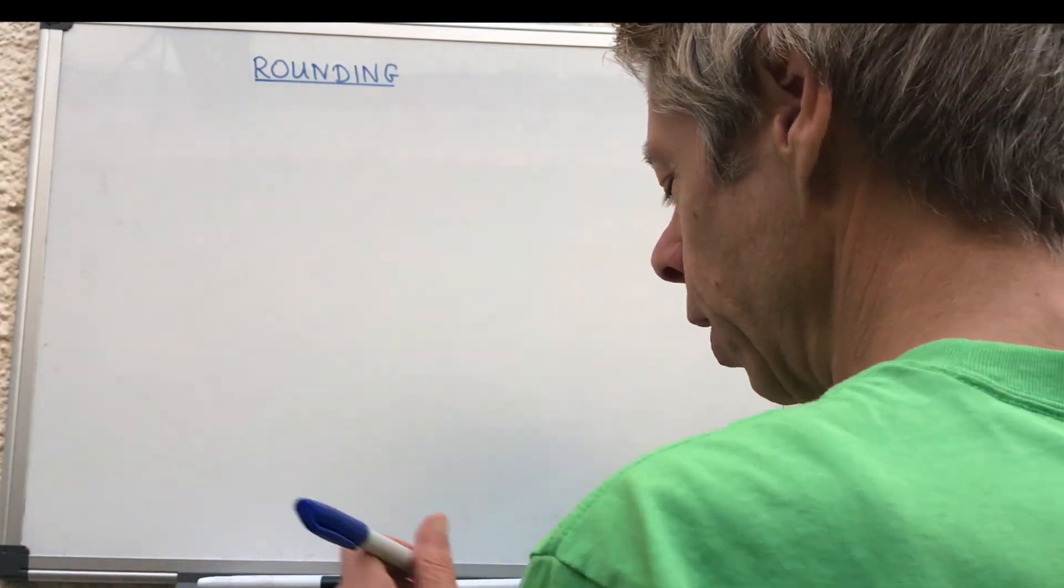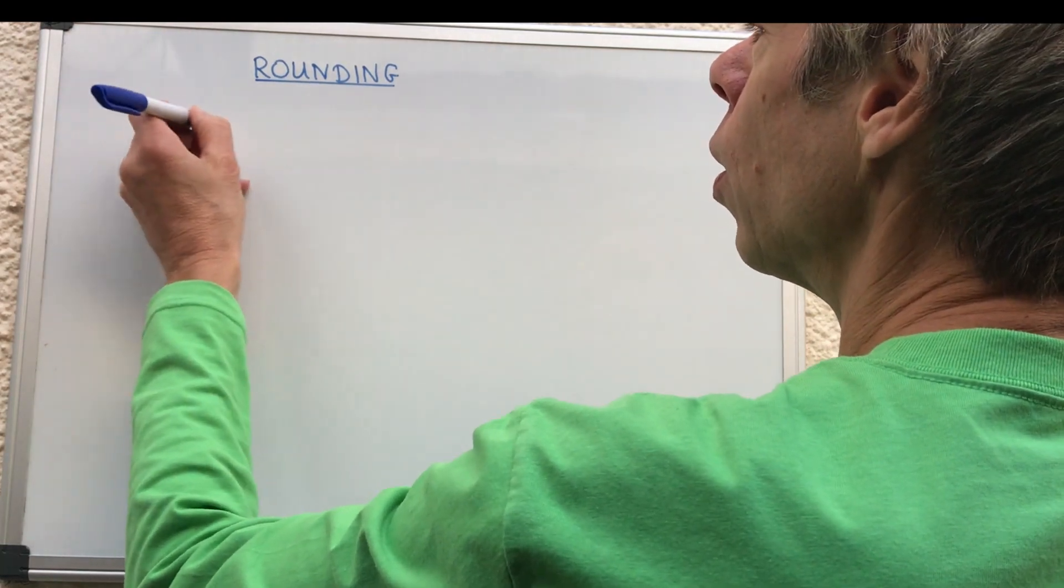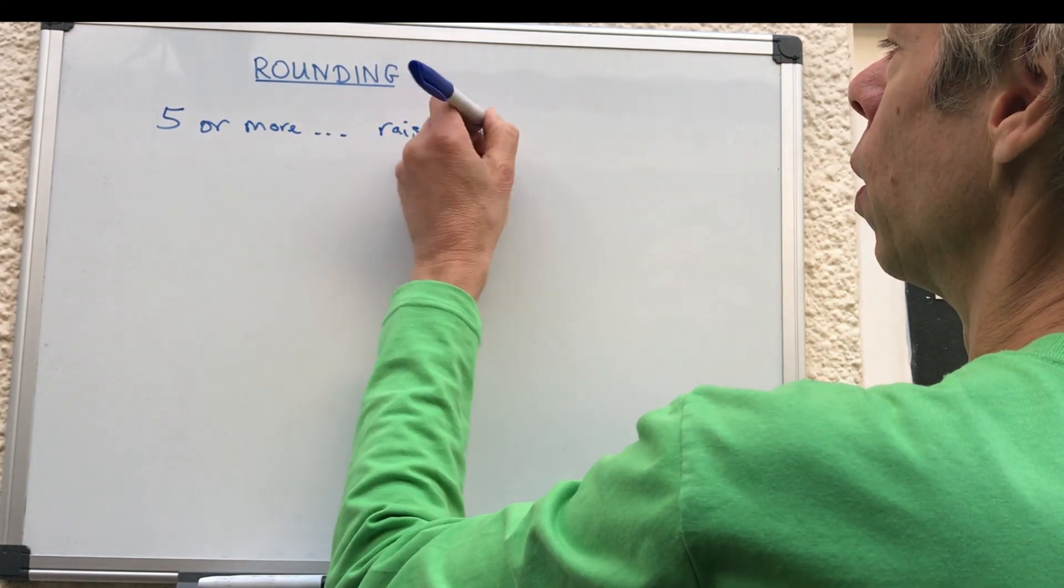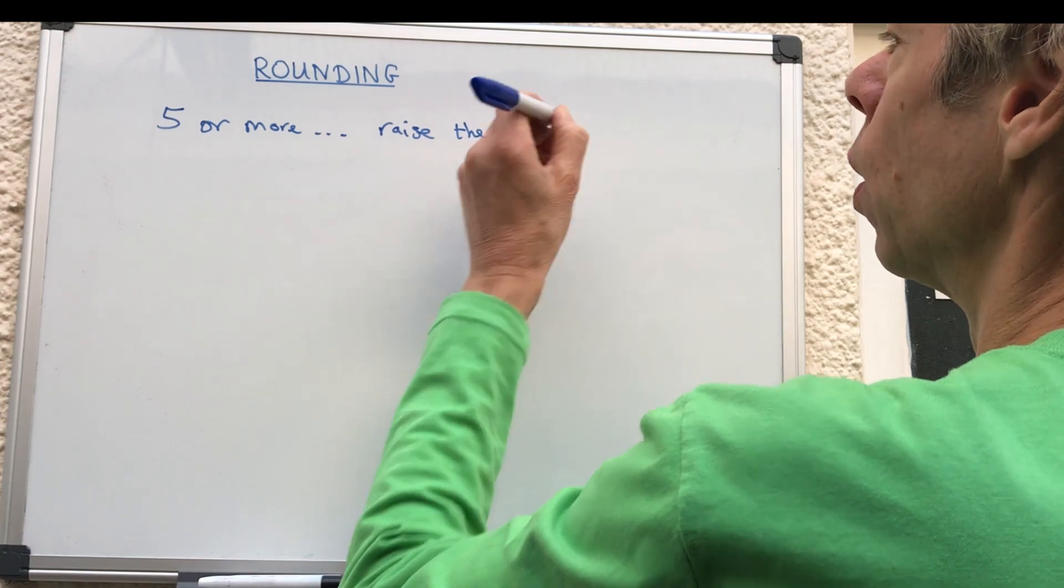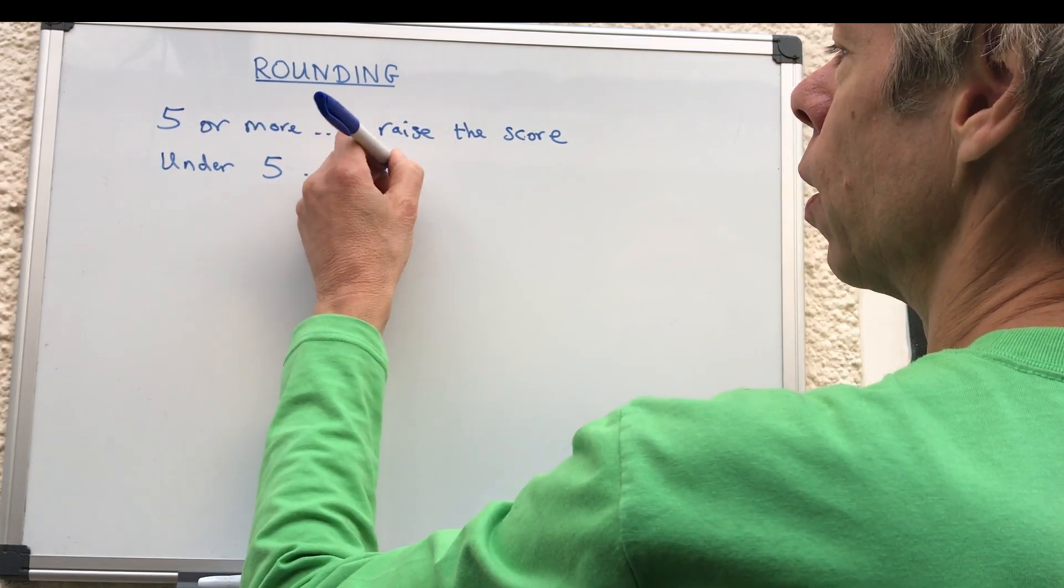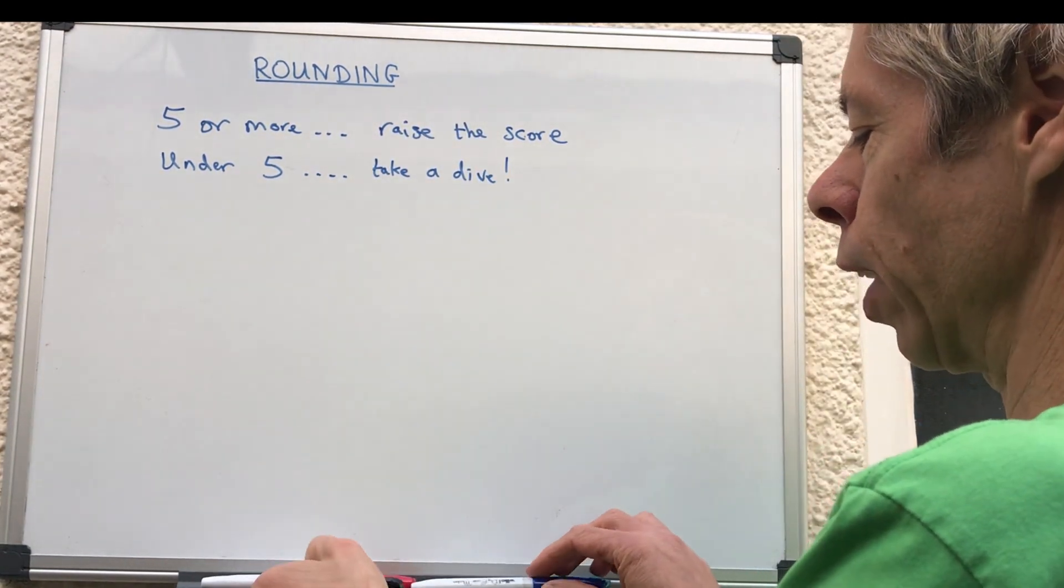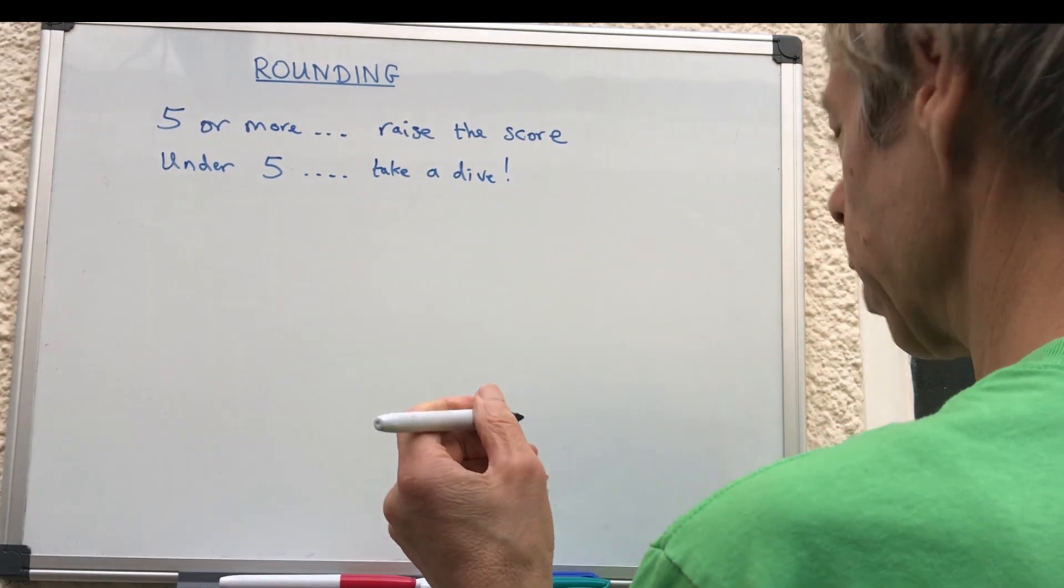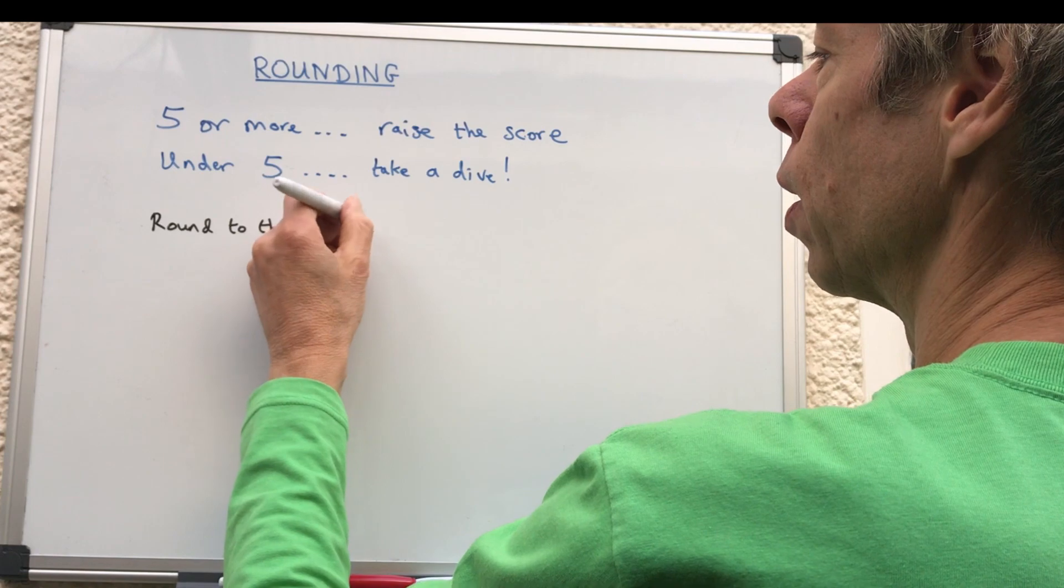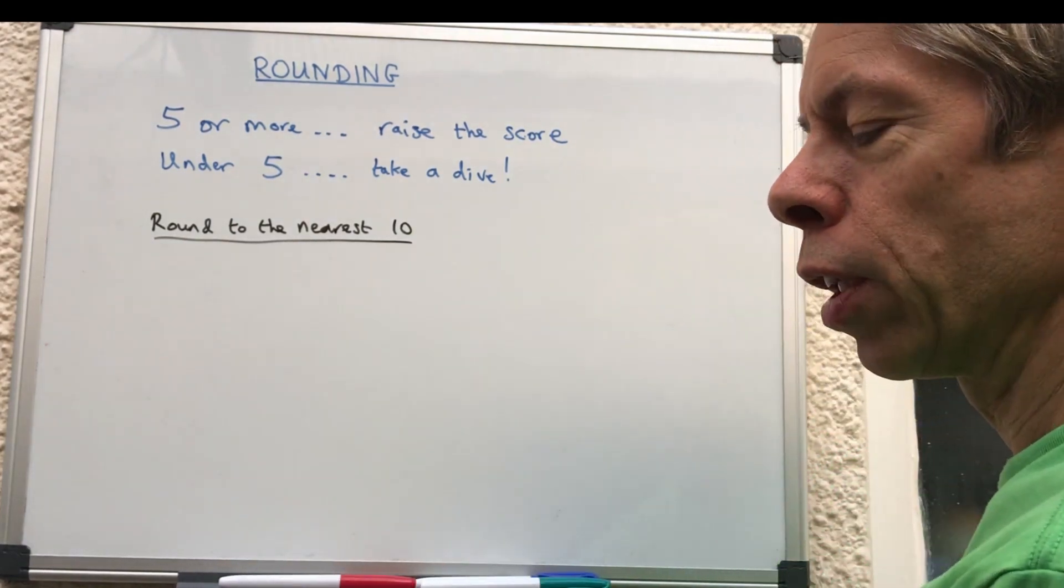So rounding, there's a little saying that I devised with some of my tutees which is five or more raise the score, and then we've got under five take a dive. So just to explain what that means. We can slightly alter that for hundreds and thousands.